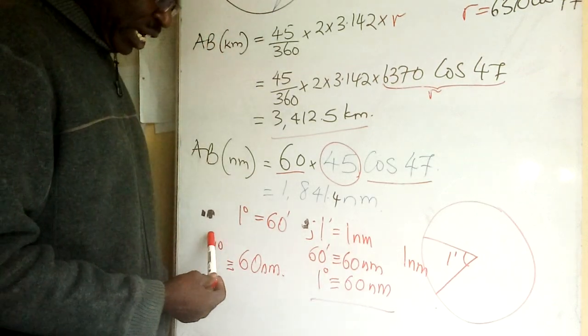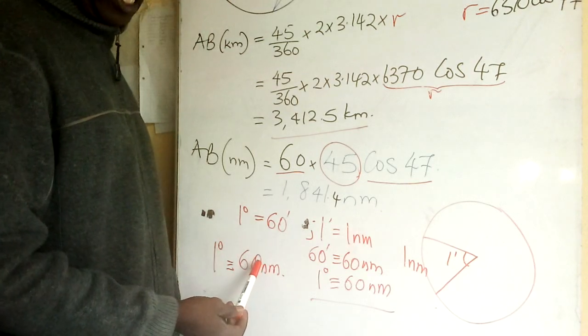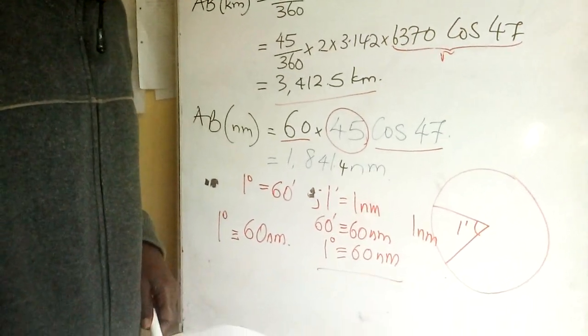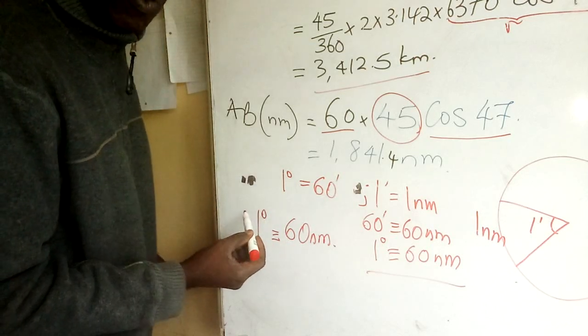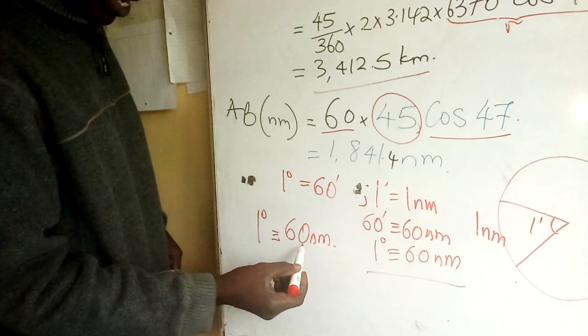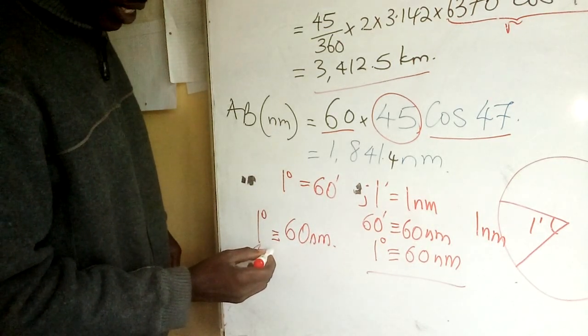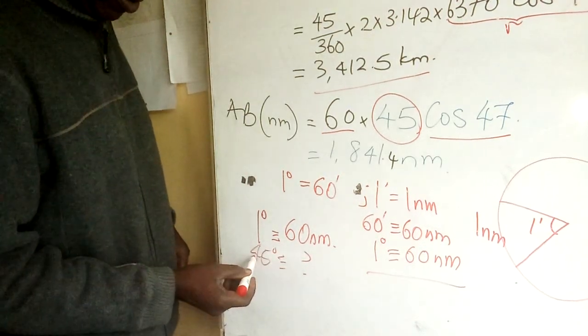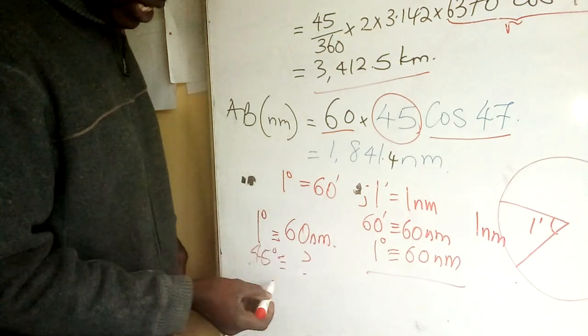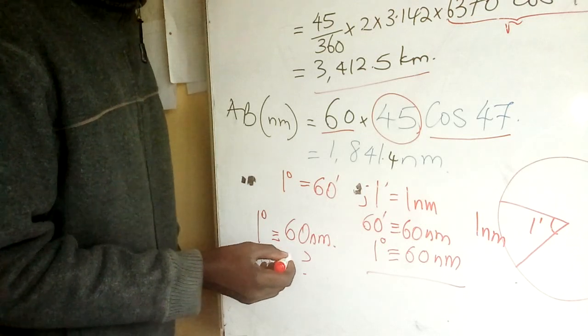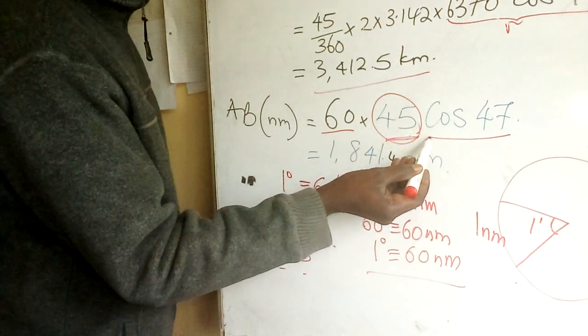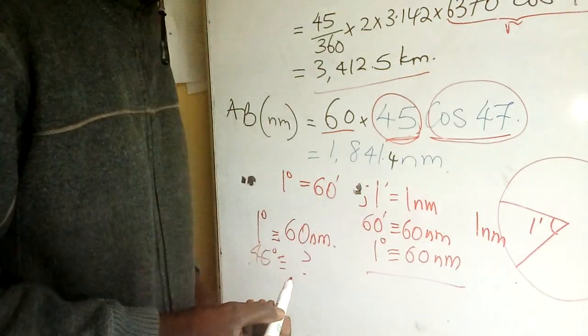In conclusion, you can relate a degree and a nautical mile. If one degree is 60 nautical miles, what about 45 degrees? It will be 45 times 60 nautical miles. But we use this relationship if it is a great circle. If it is a small circle, you will multiply the angle at the center plus an additional factor of cos latitude angle.